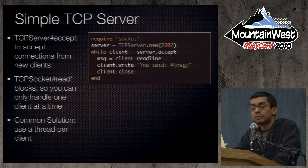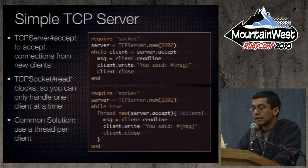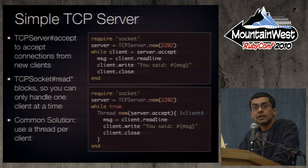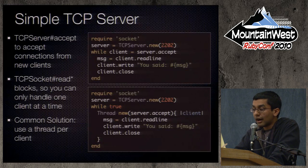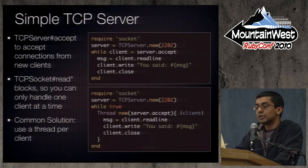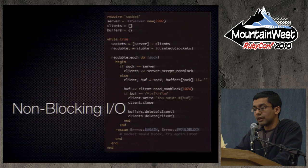A common solution to this problem is to use a thread per client. It's pretty easy to make that change — you just wrap the server accept in a thread, and for every new client that comes in, you spawn off a thread. This is cool, but it's not really a great way to scale. The alternative we're going to talk about is non-blocking I/O.